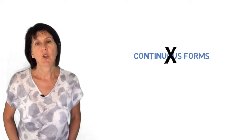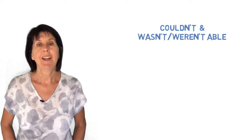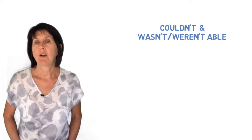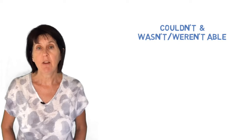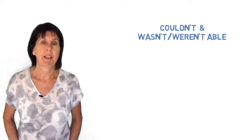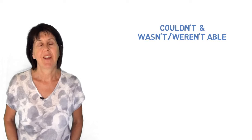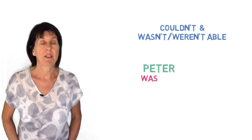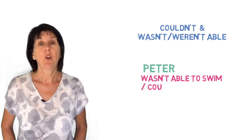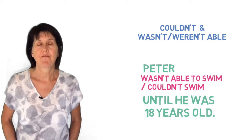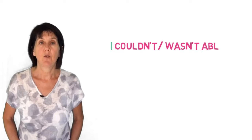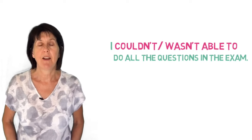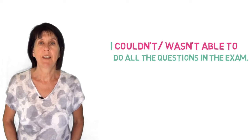Let's now talk about couldn't and wasn't or weren't able to. In the negative, couldn't and wasn't or weren't able to are used for both speaking in general and when speaking about one particular occasion. For example, Peter wasn't able to swim, or couldn't swim, until he was 18 years old — this is talking about a general ability. Or: I couldn't, or wasn't able to, do all the questions in the exam — this is referring to one particular occasion.